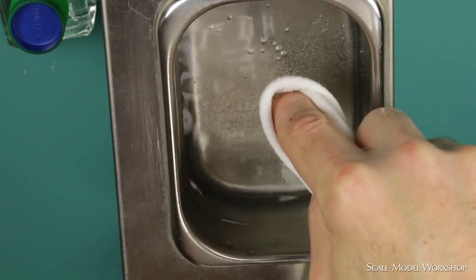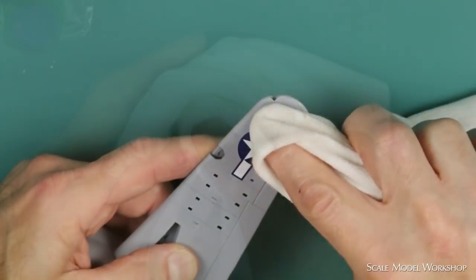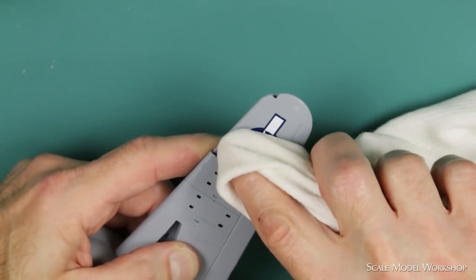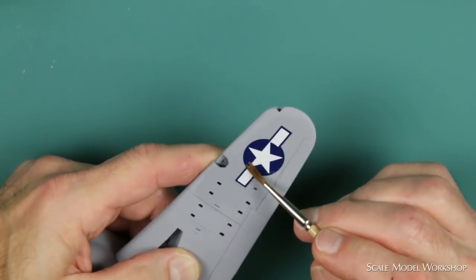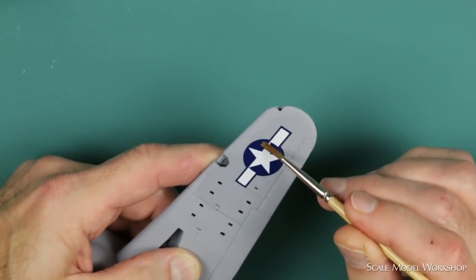A dry towel is used to remove the excess liquid around the edge of the decal. A corner of the towel is moistened in the warm water and is used to express the liquid from under the decal. A brush is used to fine-tune the position of the decal.